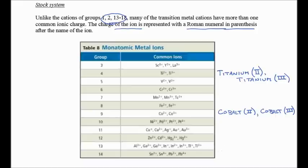The bottom one, we can have tin Roman numeral II for the 2-plus, and we can have tin Roman numeral IV for the 4-plus ion.